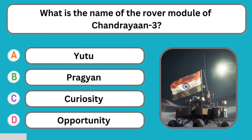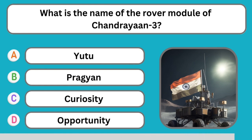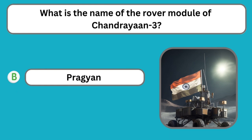Question number two: What is the name of the rover module of Chandrayaan 3? The correct answer is Pragyan.